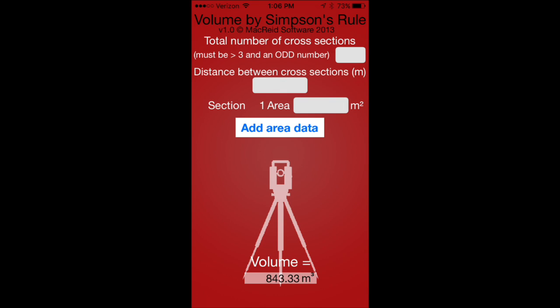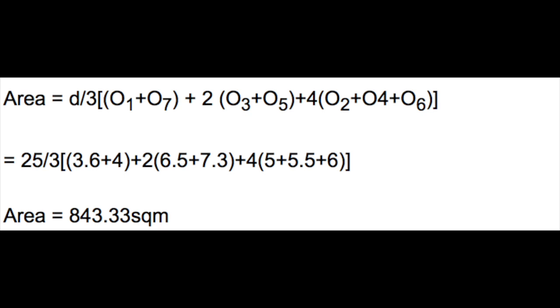Once we add that last area, we get our volume of 843.33 square meters. When we compare the values of Simpson's rule using hand calculations, the result is spot-on. Huge time-saver.